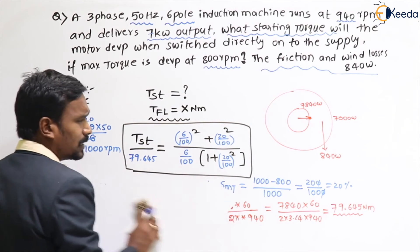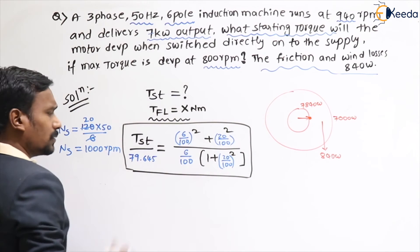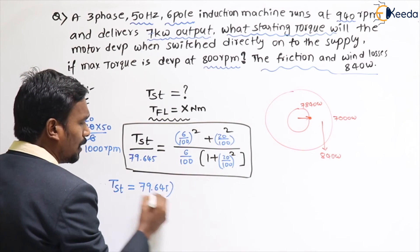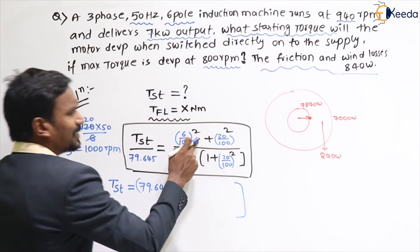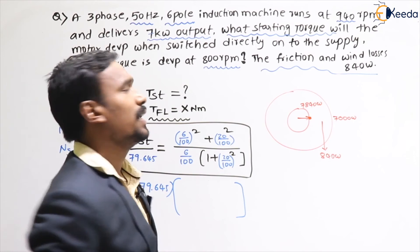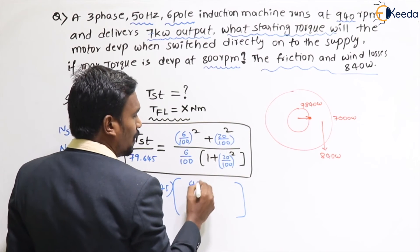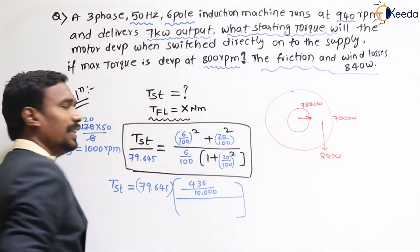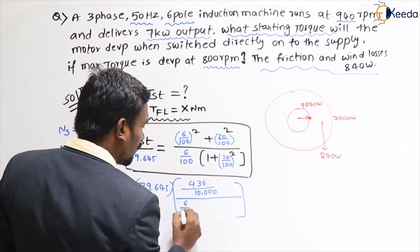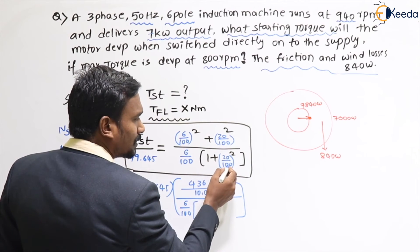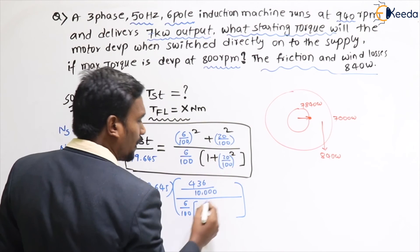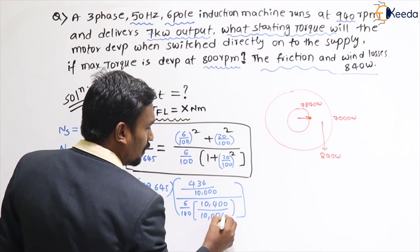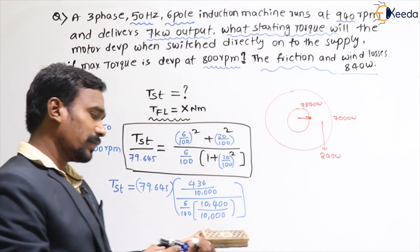Doing the calculation: 6² = 36, 20² = 400, so numerator factor = 36 + 400 = 436. For the denominator: 6 × (1 + 400/10000) — working in consistent units gives 10400/10000. The 10000 terms cancel, giving 79.645 × (436/624).